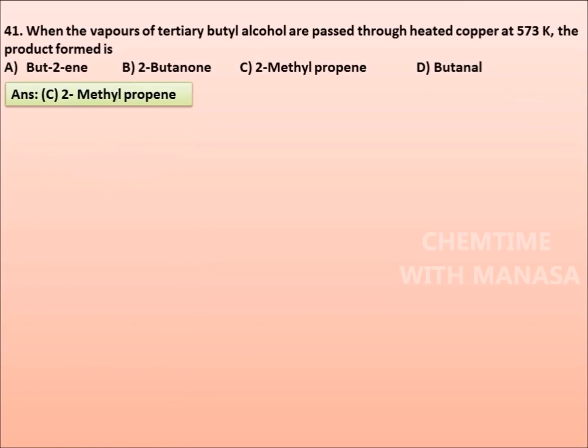Correct answer is option C, 2-methylpropene. And the reaction is: vapors of tertiary butyl alcohol are passed through copper at 573 Kelvin and the product formed is 2-methylpropene.